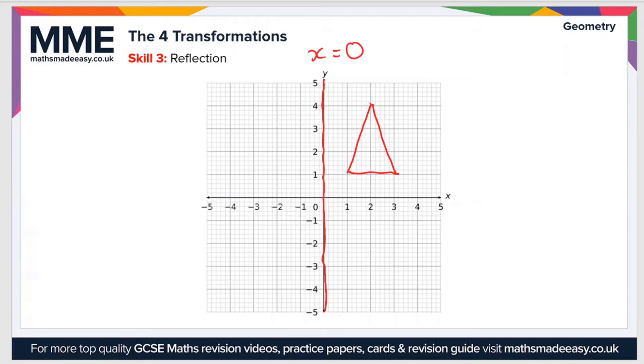...the easiest way to do that is to look at the corners of the shape. In this case that's here, here and here, and we draw the same points on the opposite side of the line the same distance away. Here you can see there's a distance of one square, so we'll go one square in the other direction. That's our first point.